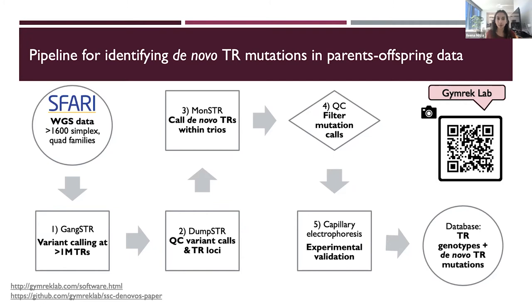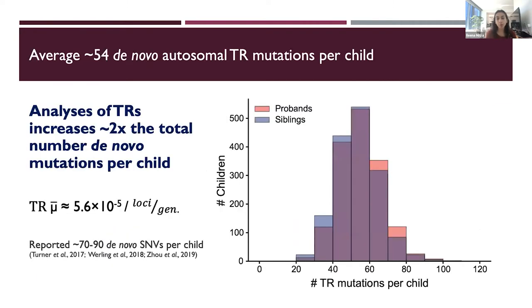After processing all our families, we developed a database of tandem repeat genotypes in the mother and father, and new de novo tandem repeat mutations in the children. This resource allowed us to ask many interesting questions. We found over 175,000 high-confidence de novo tandem repeat mutations across the genome, and on average there are about 54 de novo tandem repeat mutations per healthy child, which is likely an underestimate.